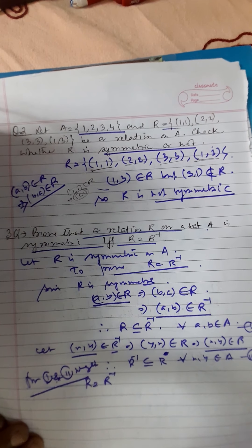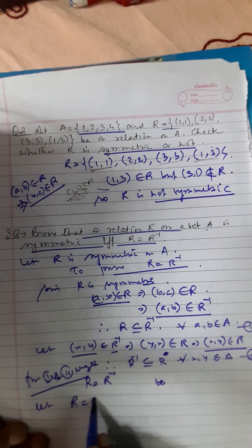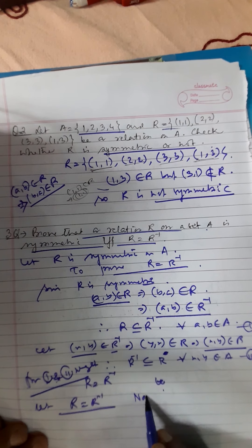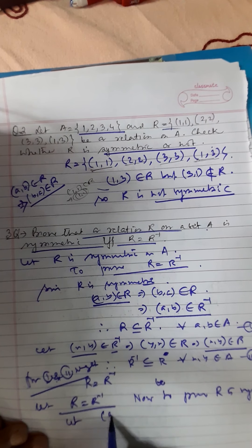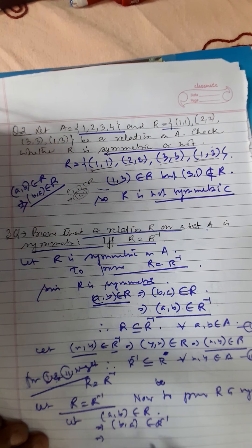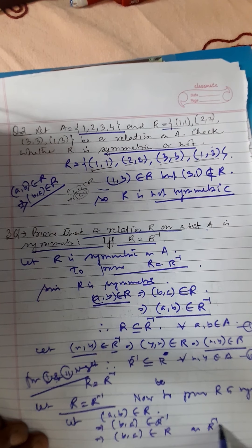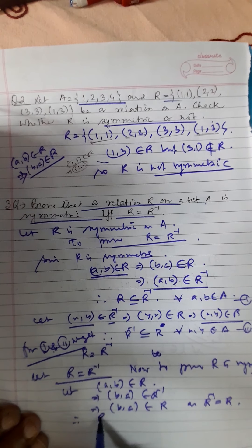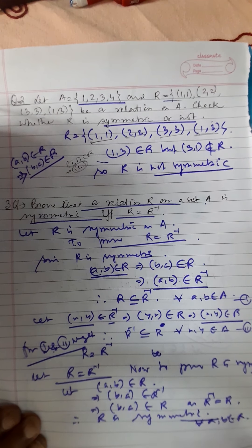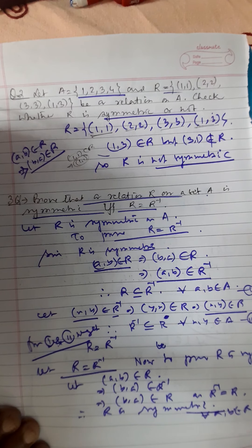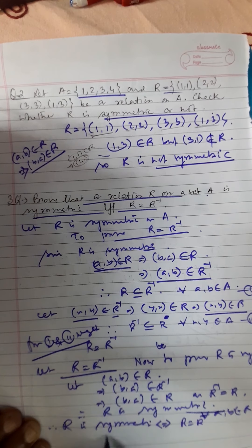Now, conversely, if R equals R inverse, we have to show R is symmetric. Let R equal R inverse. Let A comma B belong to R. It implies B comma A belongs to R inverse. But R inverse equals R, so B comma A belongs to R. Therefore, R is symmetric, for all A comma B belonging to R. Hence, R is symmetric if and only if R equals R inverse.